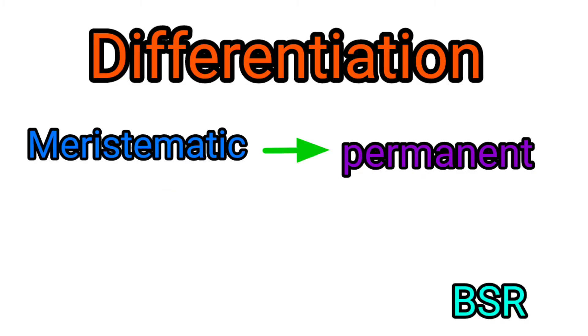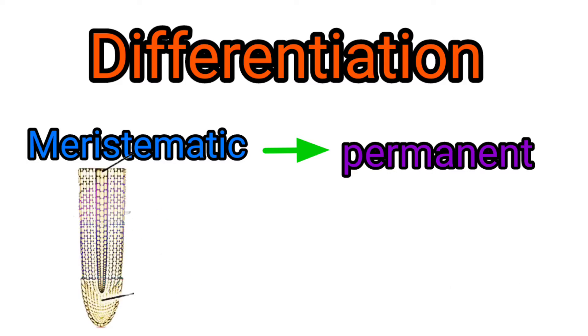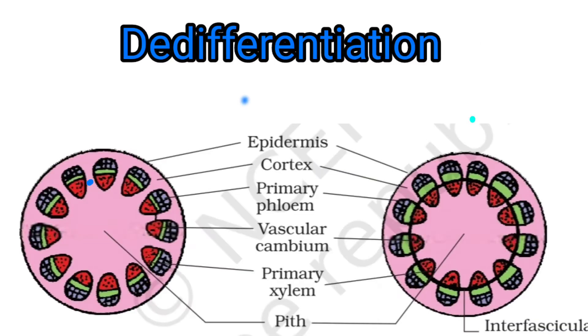Simple thing: when meristematic tissue is converted into permanent tissue, that is called differentiation.